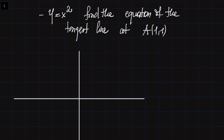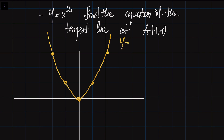I'm going to put the coordinate system here. The points are: when X equals 1, Y equals 1; when X equals minus 1, Y equals 1; when X equals 2, Y equals 4. Connecting all those points gives us the curve Y is equal to X squared. What we have to do is create the line passing through the point (1, 1) and figure out its equation — that's going to be the tangent line.